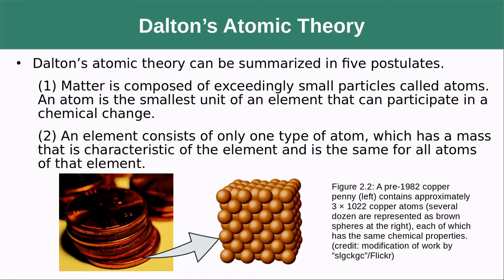The second postulate is that an element consists of only one type of atom, which has a mass that is characteristic of the element and is the same for all atoms of that element. So every atom of copper, for instance, weighs the same amount — that's why every penny of roughly the same size is going to weigh the same amount.